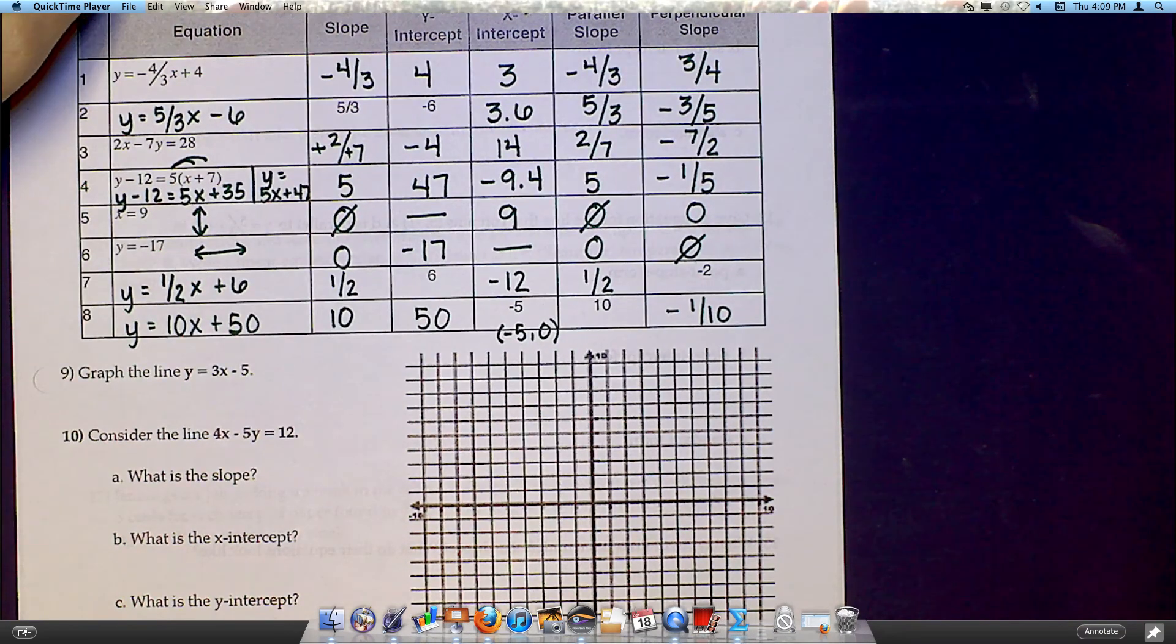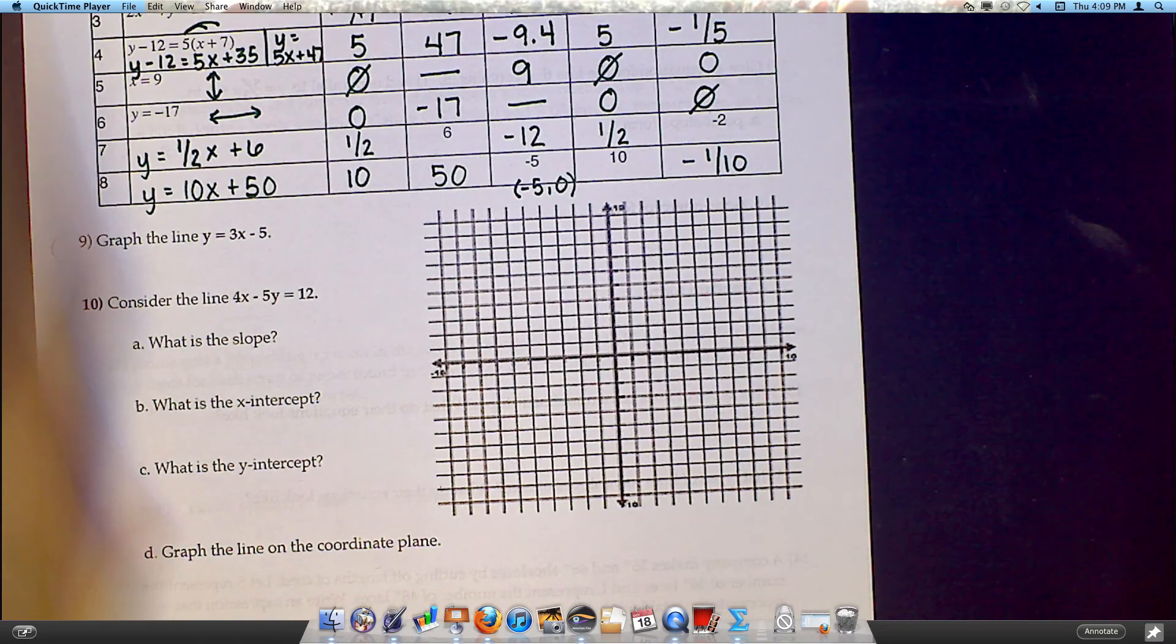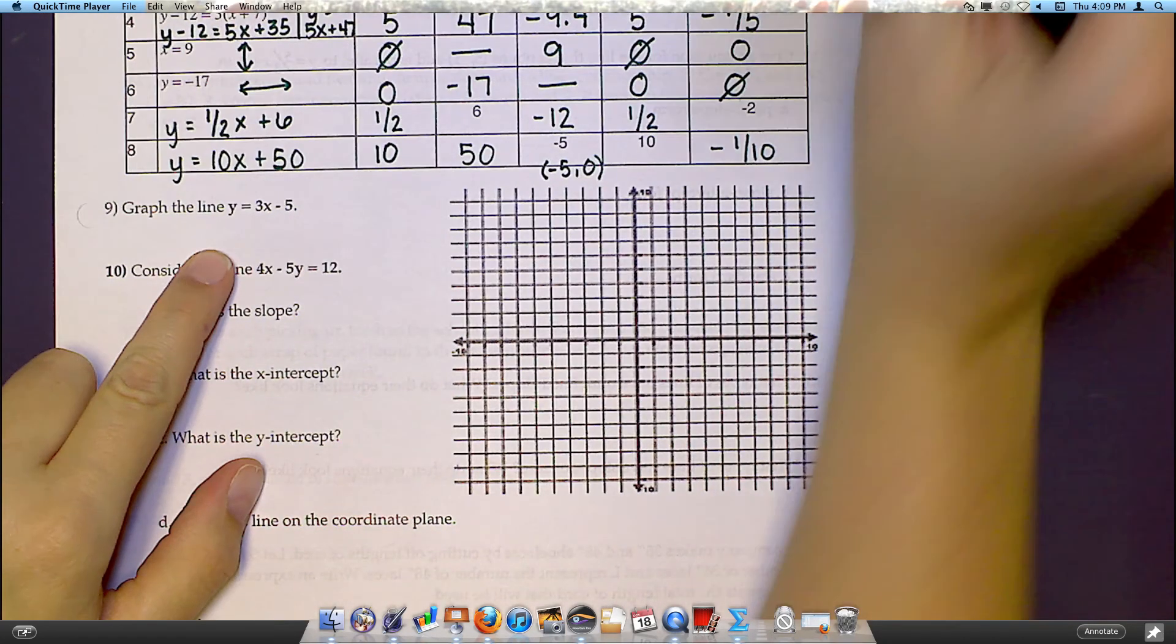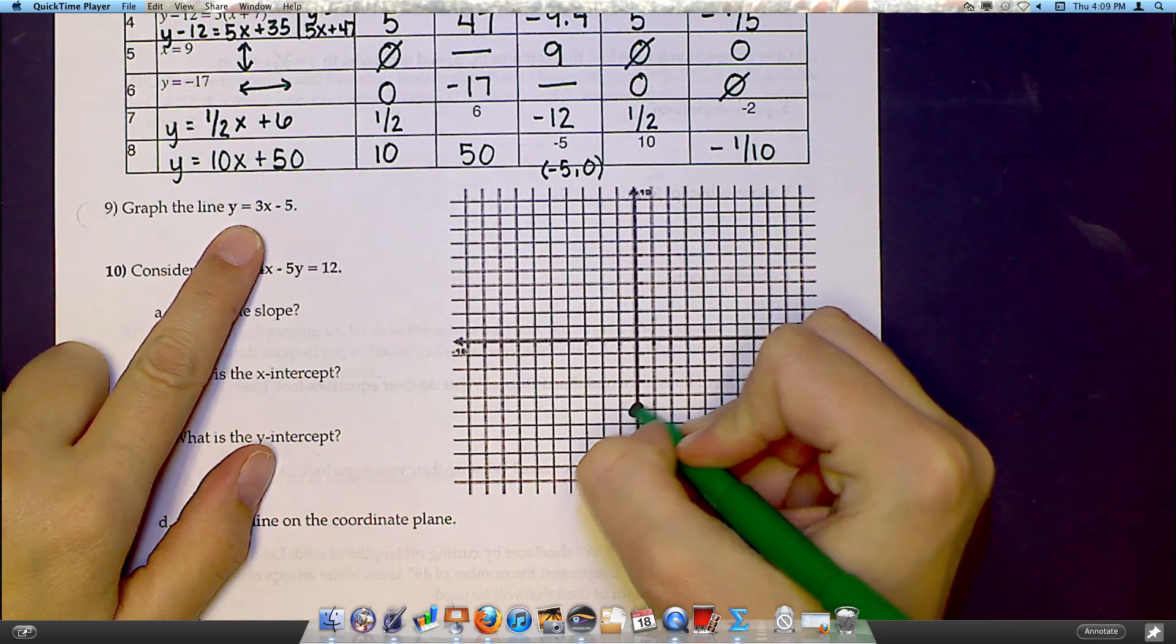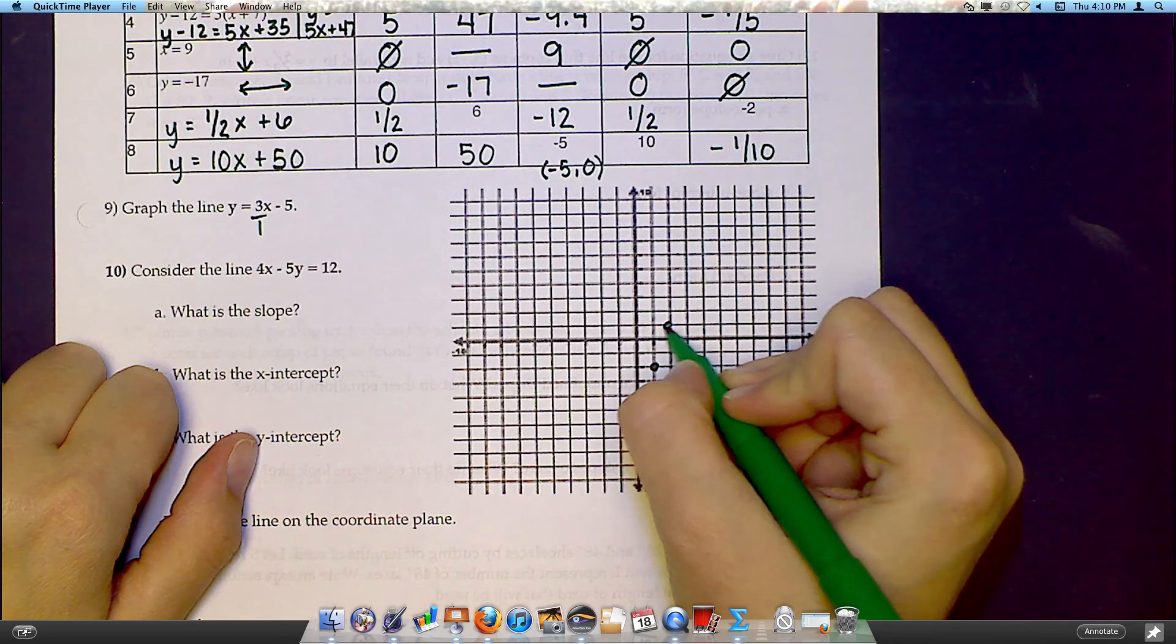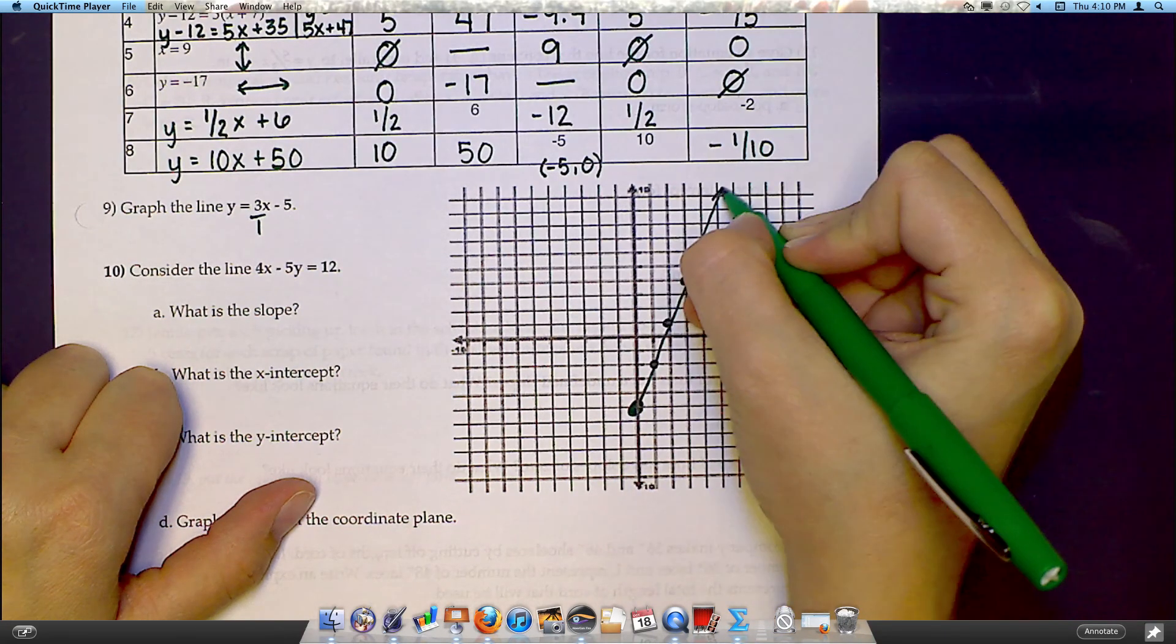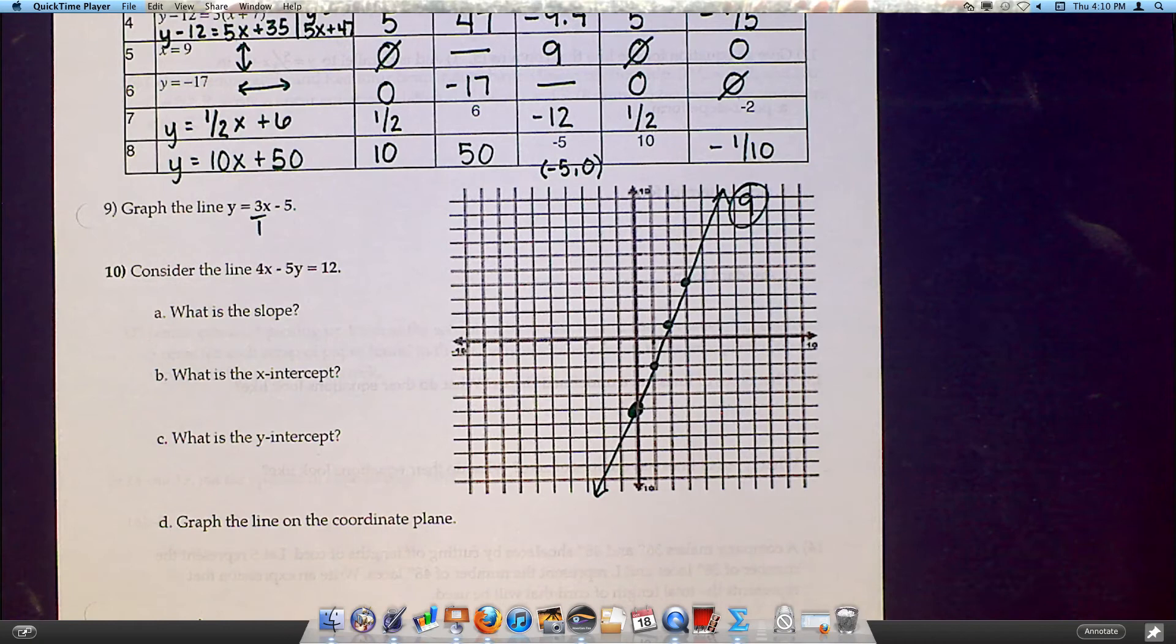Now it would be a good time to rewind and watch any piece of that that you didn't quite catch. Let's look at 9 and 10 that are asking you to graph. So the first one says graph the line y equals 3x minus 5. If that's in slope-intercept form, and I don't have any other information about it, the best way to go would be to start at negative 5 on the y-axis. That's your y-intercept. And then your slope right now is 3 over 1. So that's telling you from here I should go up 3 and over 1. Up 3 and over 1. Up 3 and over 1. Let's connect all those dots. And that would be your line.